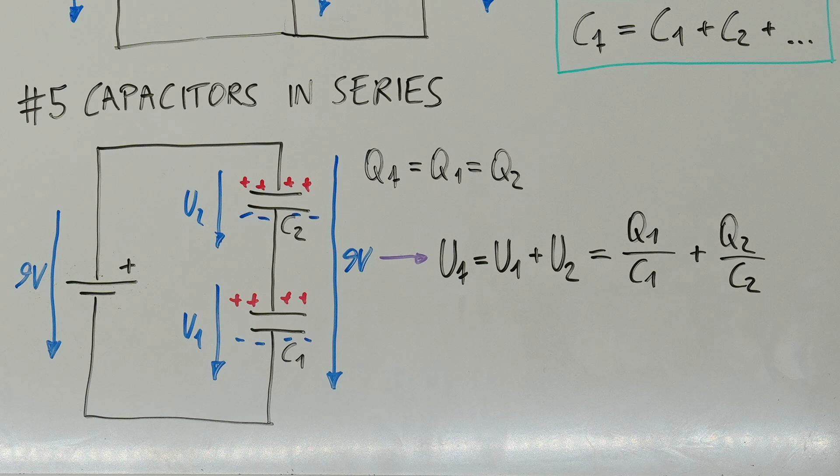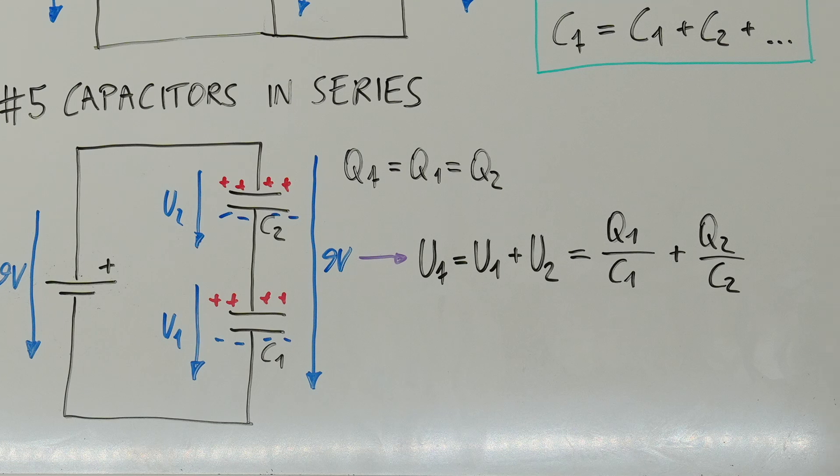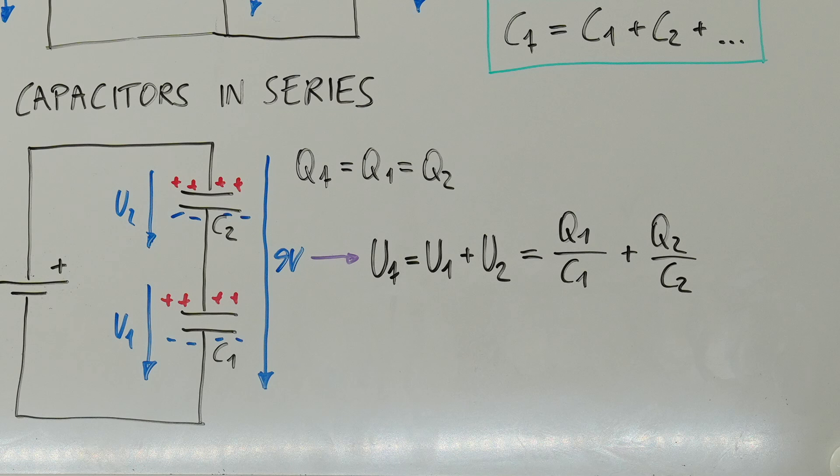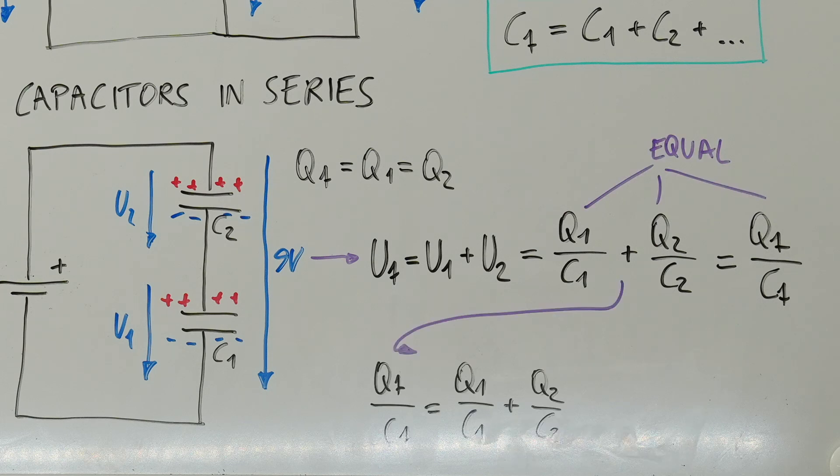The total voltage drop across the two capacitors must still be the battery voltage. So, we can add the individual voltages to get the total voltage. So, Ut is equal to U1 plus U2. Now we can insert the reformulated capacitance formula for U is equal to Q over C. Then, we get Q1 over C1 plus Q2 over C2 is equal to Q total over C total.